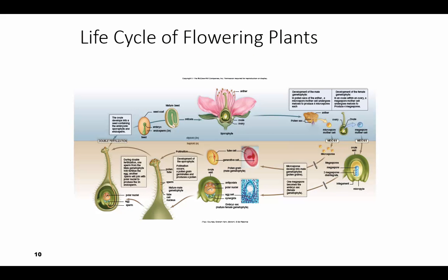Looking at this — it's on page 178 in your textbook — you see the flower up here at the top. You've got the stigma, style, ovary, and then the anther and the filament. The anthers make the pollen sacs; that's where the pollen, the microspore, develops.